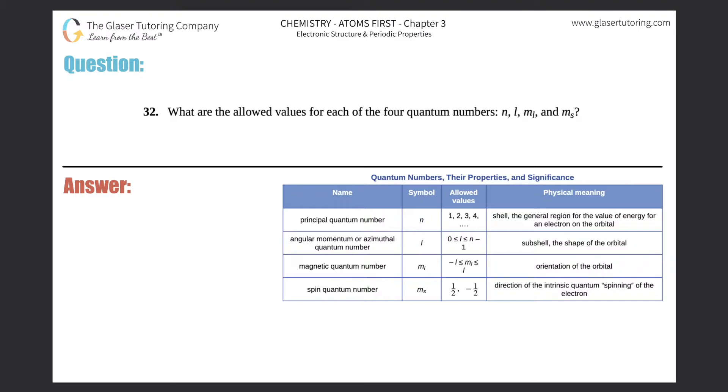Number 32: What are the allowed values for each of the four quantum numbers n, l, ml, and ms? I'm going to go over how to find out the actual values for these quantum numbers. In the next question I'll talk about what they actually mean, so this time we're just going to focus on how to get the actual numbers.